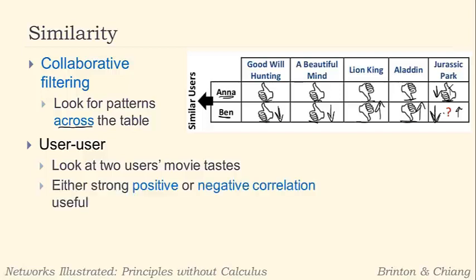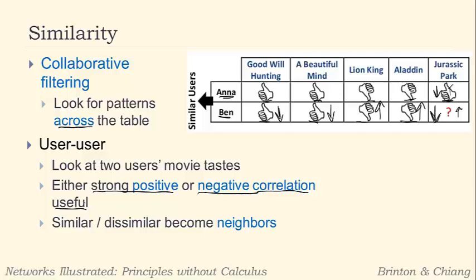So again, it's either a strong positive correlation — which we just illustrated — or a strong negative correlation. Neither one is useless; we just don't want no correlation. We don't want no pattern in whether they agree or disagree. Now, if Anna and Ben are very similar or very dissimilar, we call them neighbors. That's what we use when we develop what's called the neighborhood method. We'll look at how we develop the neighborhood predictor throughout the rest of this lecture.